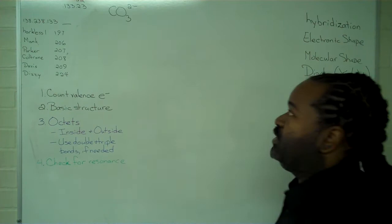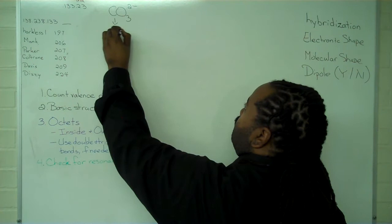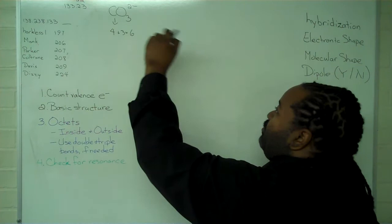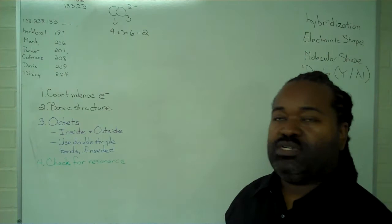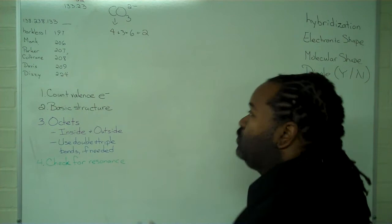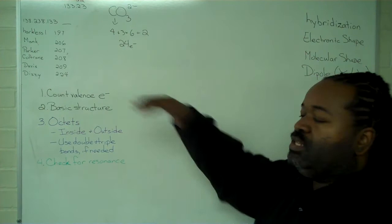The first step in our process is to count up the valence electrons. We can use the periodic table for that. Carbon will give us 4. Each of our 3 oxygens will give us 6 valence electrons. And because we have a negative 2 charge, that means we have to add on 2 more electrons. So 3 times 6 is 18, plus 2 more is 20, plus 4 more gives me a total of 24 electrons to work with.